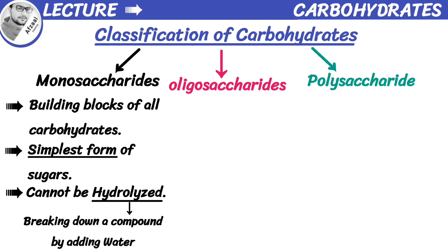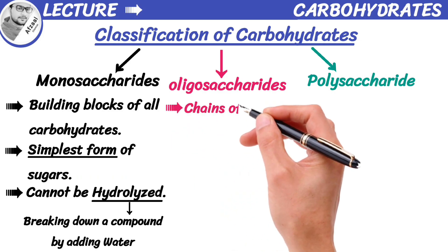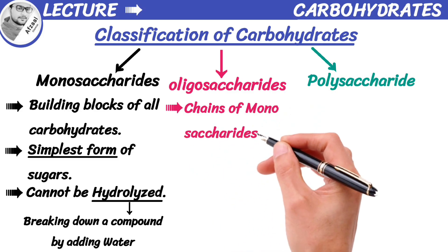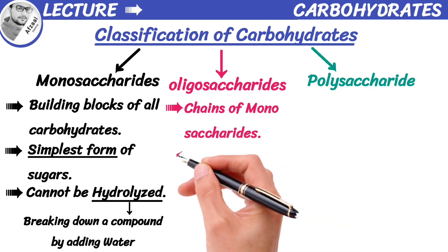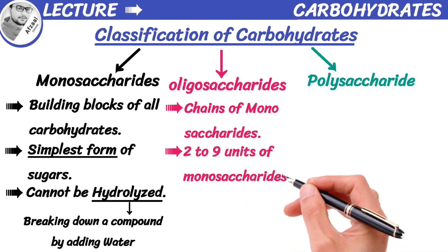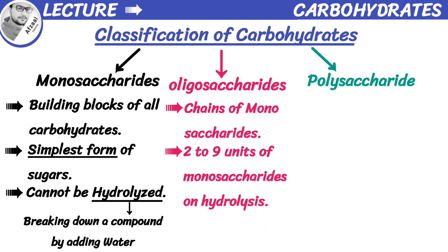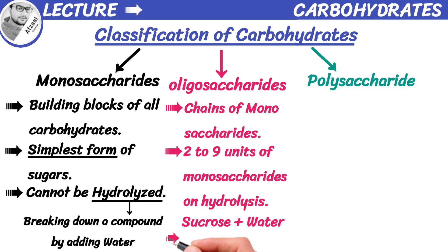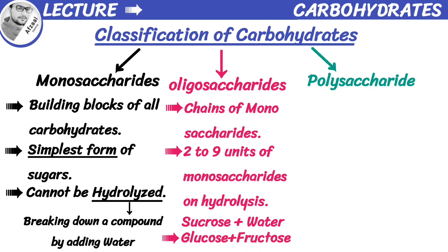Oligosaccharides are basically chains of monosaccharides, giving 2 to 9 units of monosaccharides on hydrolysis. For example, when we hydrolyze sucrose — which is a common table sugar made up of glucose and fructose — we get those two individual sugar molecules.